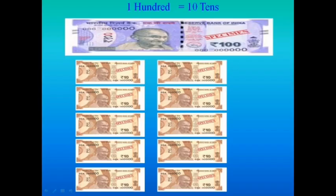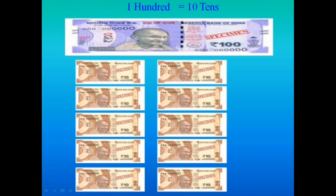Next, see the image. In a 100 rupees note, how many 10 rupee notes? Let us count: 1, 2, 3, 4, 5, 6, 7, 8, 9, 10. A 100 rupee note is equal to 10 ten-rupee notes. So 100 is equal to 10 tens. Did you understand, students? Yes.